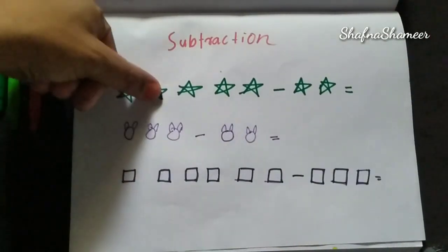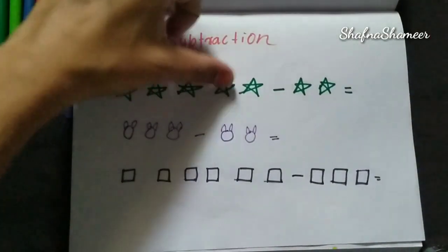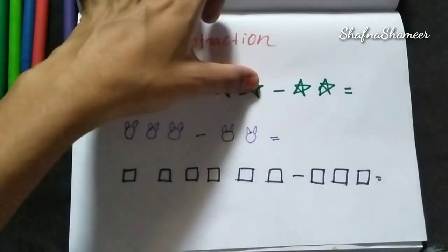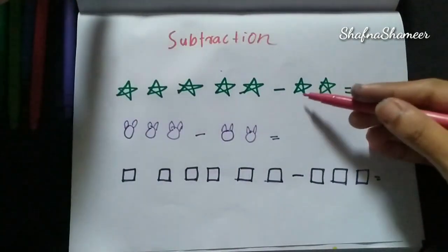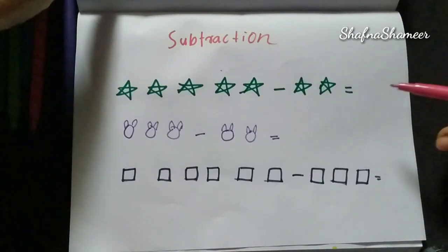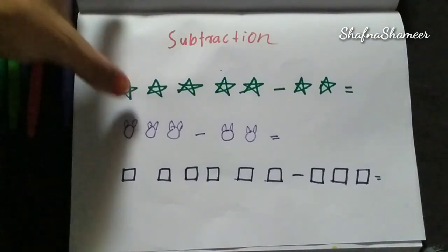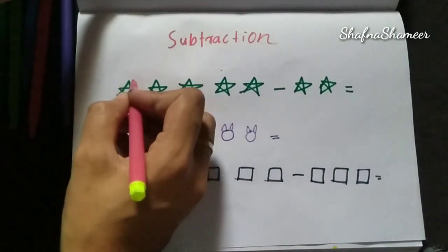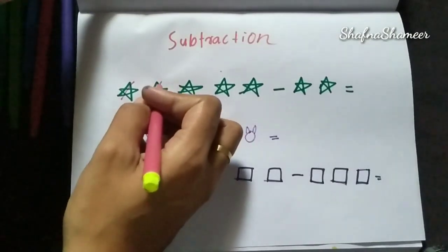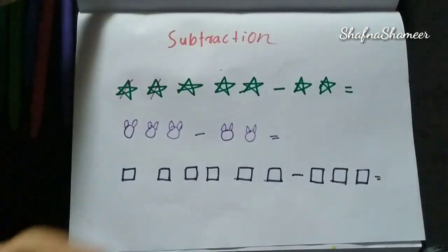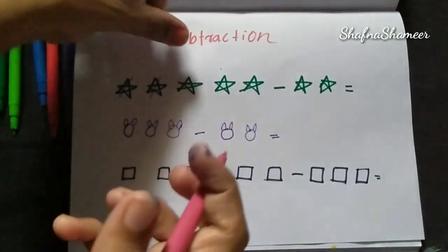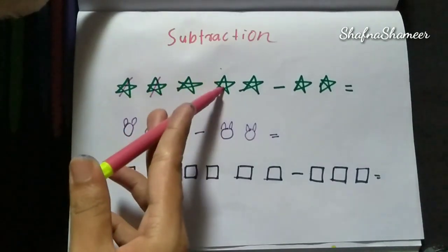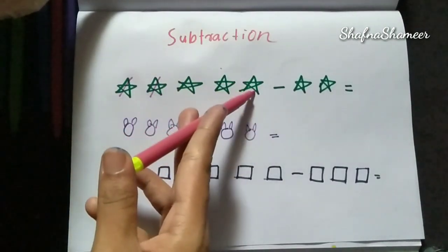You can add 5 stars to this one. 1, 2, 3, 4, 5 stars. Now I'm going to subtract 2 stars from this one. This will leave 1, 2. You can count the balance — balance is 3. Count: 1, 2, 3.